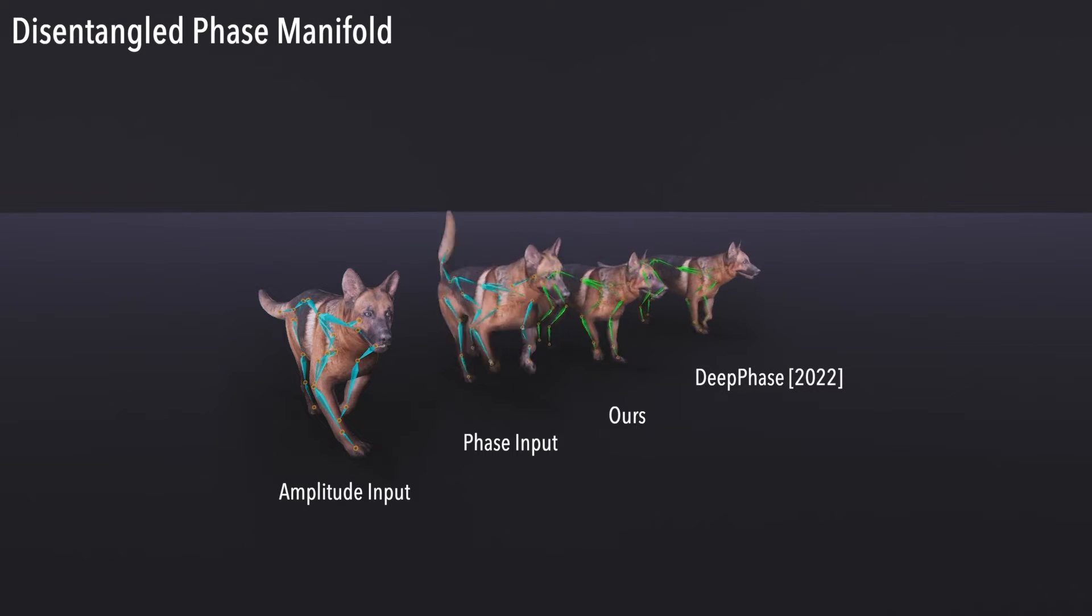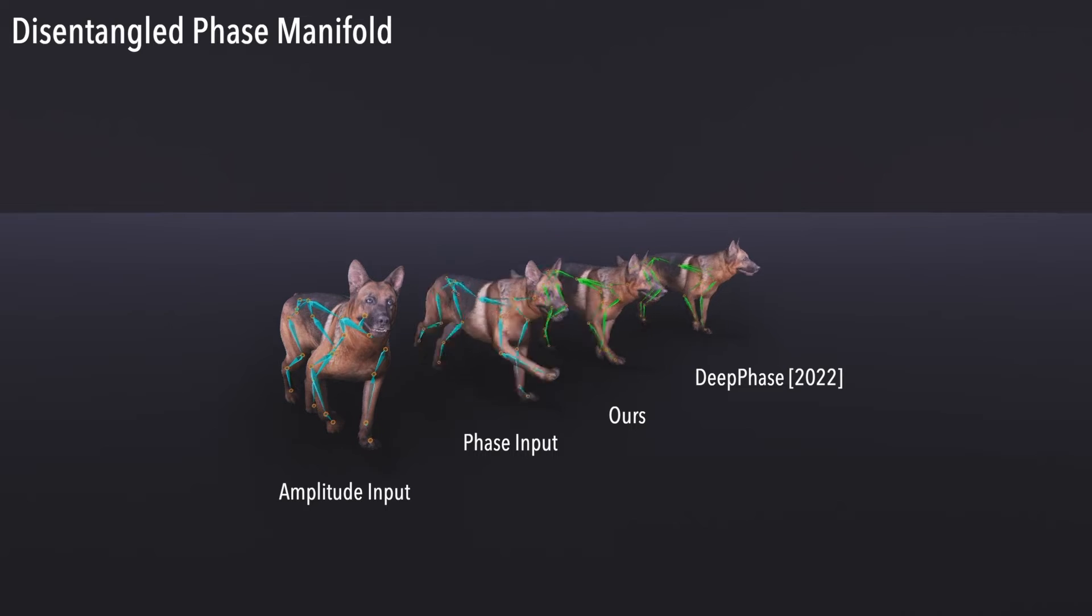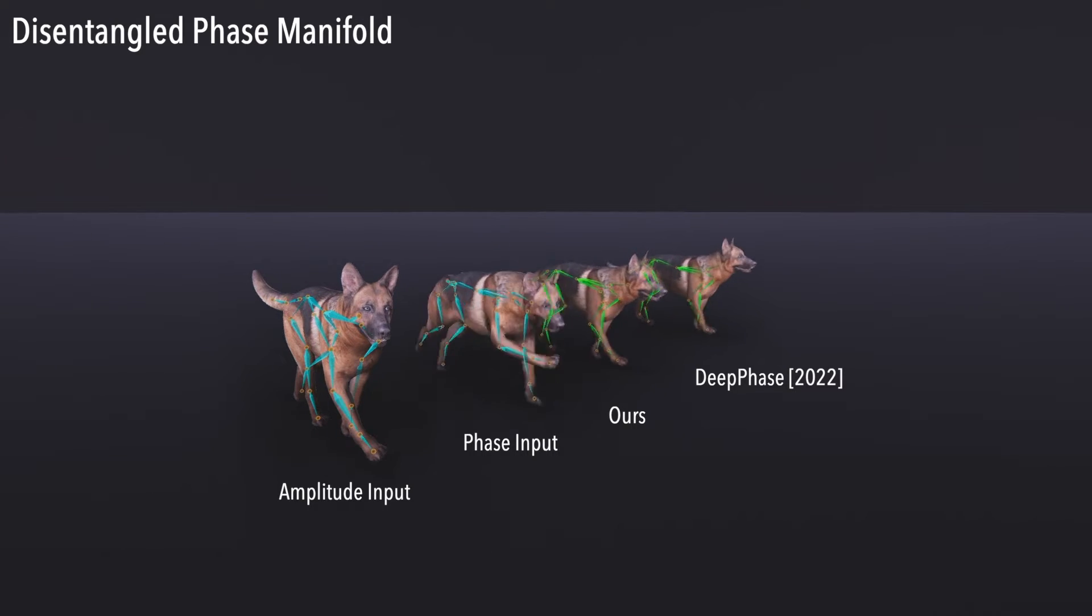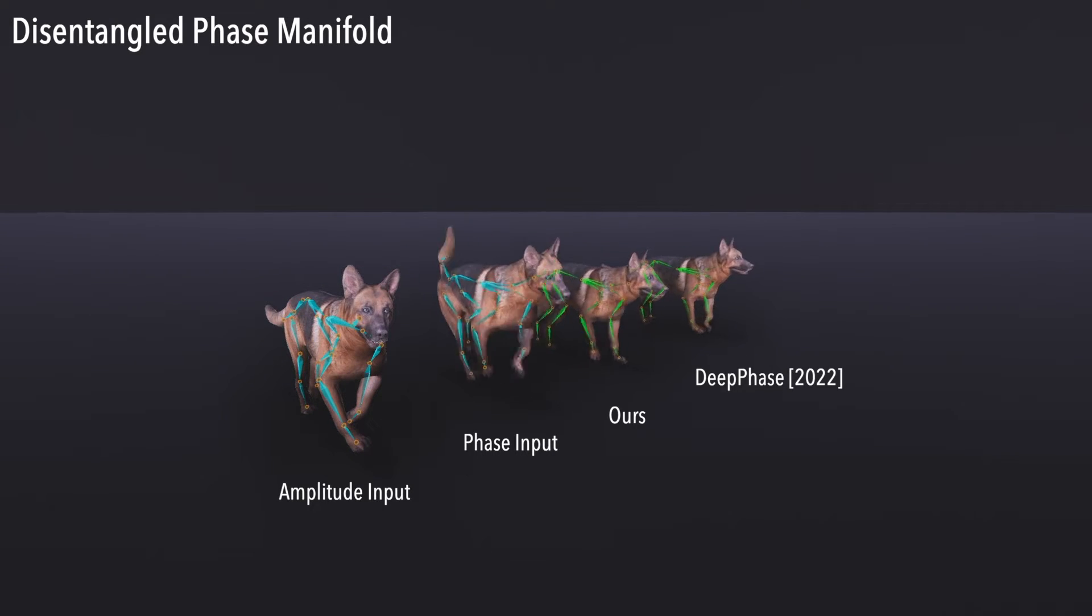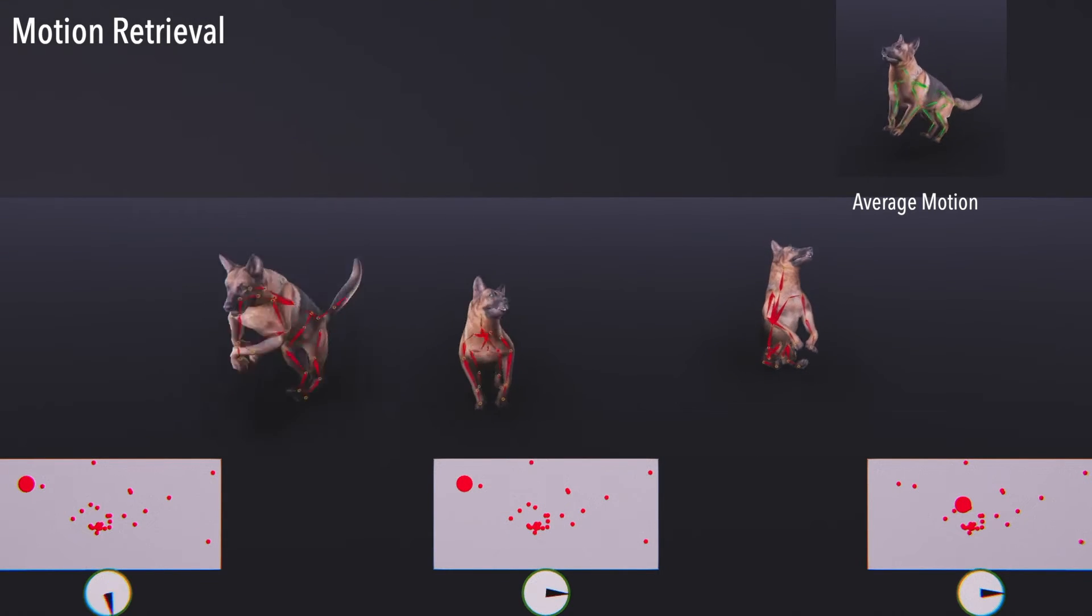Our learned manifold effectively disentangles amplitudes and phases. The output motion combines the content of the semantics of the amplitude input and the timing of the phase input, while deep phase fails to synthesize meaningful motion in the same setting. We can retrieve diverse motions of the same semantic meaning from our well-structured clusters by varying the frequency used for querying in the database.